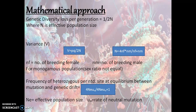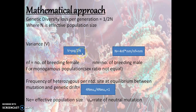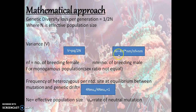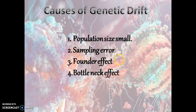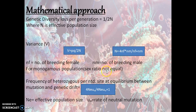This slide covers the mathematical approach to genetic diversity. Loss per generation is 1/2n, where n is the effective population size. Variance V equals pq/2n, where n is also the effective population size. The effective population size formula is: 4·Nf·Nm divided by (Nf + Nm), where Nf is the number of breeding females and Nm is the number of breeding males.